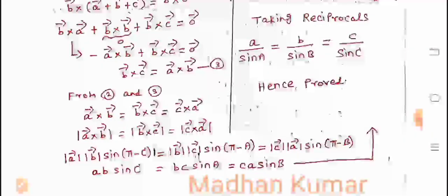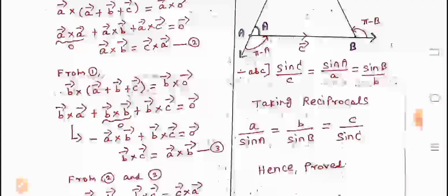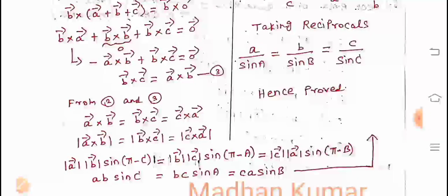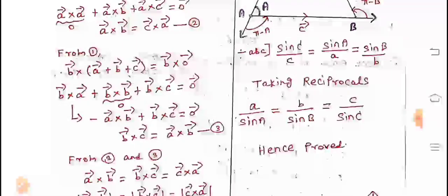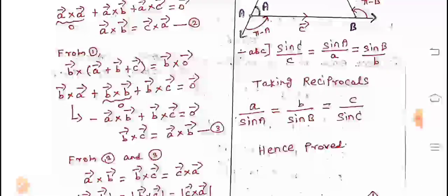Applying modulus on both sides and using the definition: modulus of A times modulus of B times sin(angle between A and B) equals modulus of B times modulus of C times sin(angle between B and C) equals modulus of C times modulus of A times sin(angle between C and A). The angle between A and B is pi minus C, between B and C is pi minus A, and between C and A is pi minus B. Since sin(180 minus theta) equals sin theta, this gives AB sin C equals BC sin A equals CA sin B. Dividing through, sin C over c equals sin A over a equals sin B over b. Taking reciprocals: a over sin A equals b over sin B equals c over sin C. Hence proved.